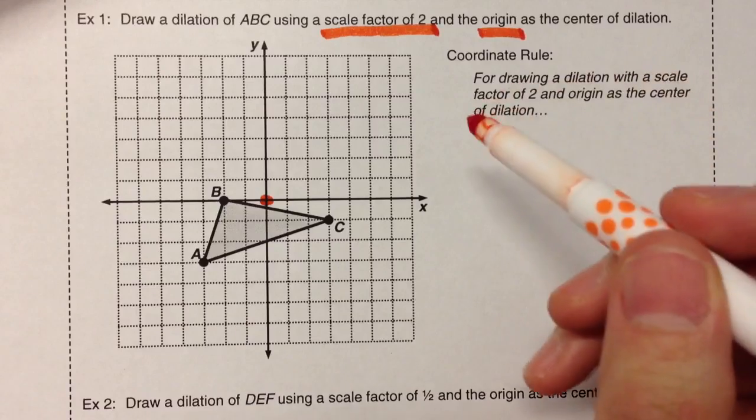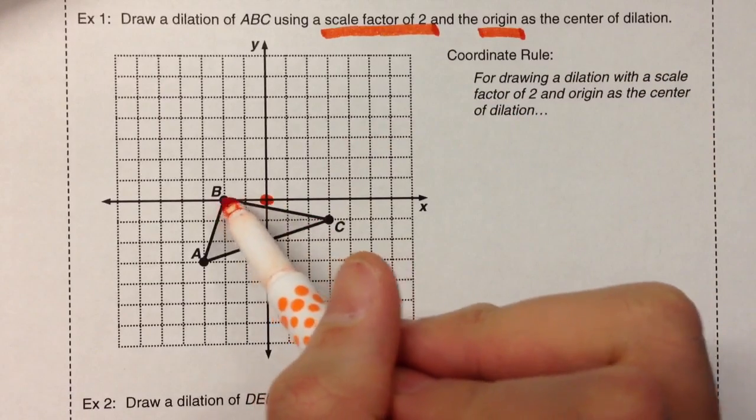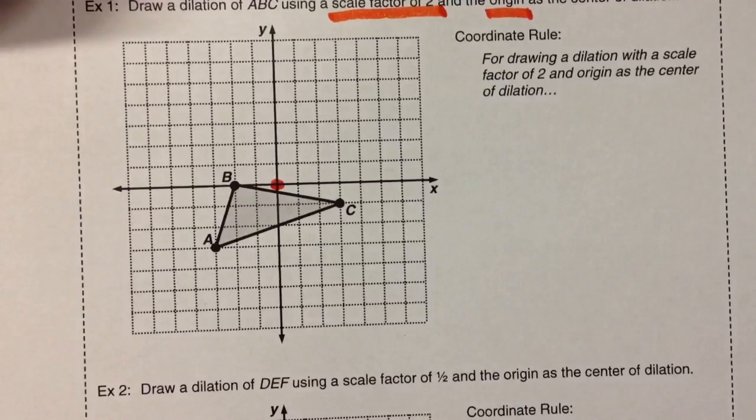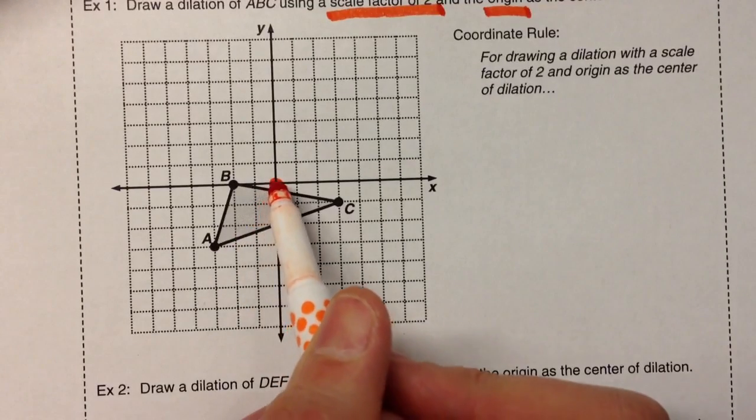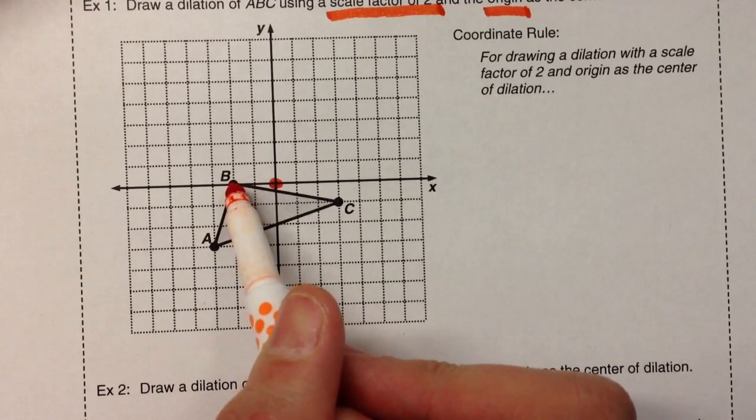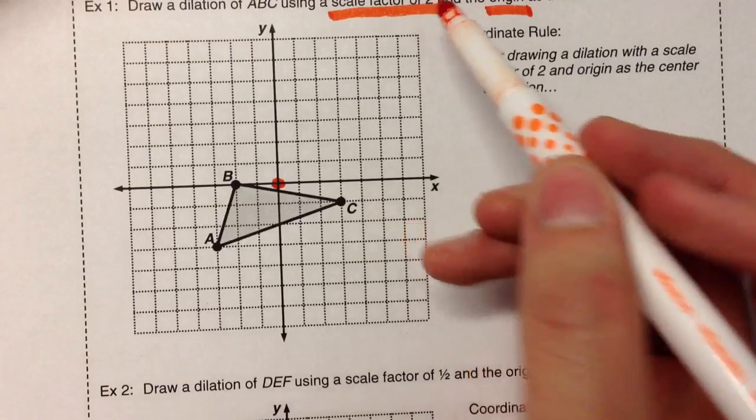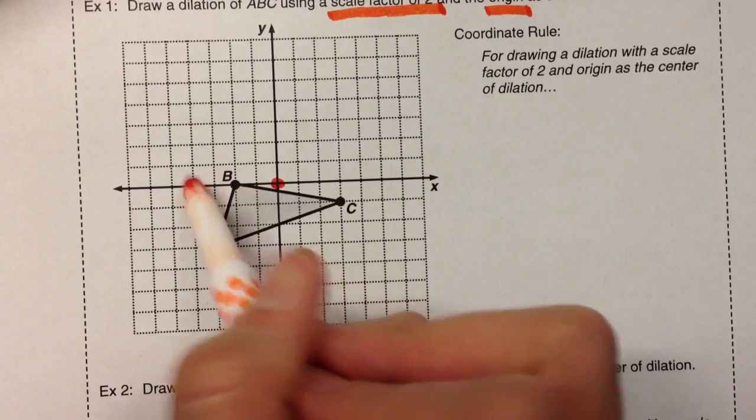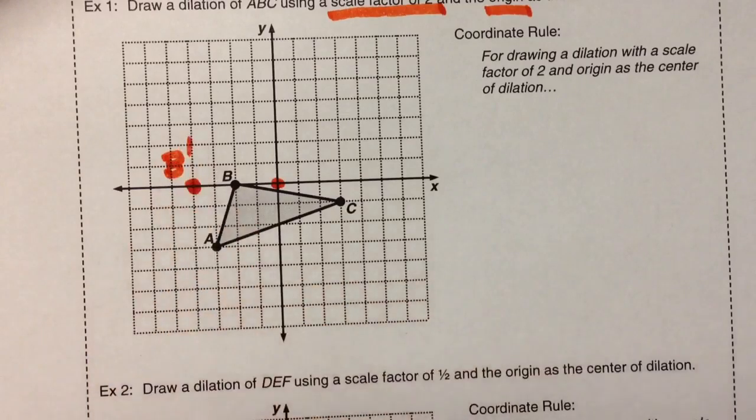What we're going to do is multiply the distance to each point by the scale factor. So point B, which happens to be two steps to the left, multiply that by two. Two times two is four, so B' is going to be four steps away, right there.